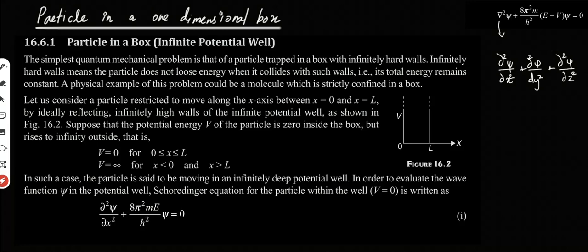The simplest quantum mechanical problem is that of a particle trapped in a box with infinitely hard walls. Infinitely hard walls means the particle does not lose energy when it collides with such walls. That is why we have the elastic collision — there is no energy lost even when there is a collision. If the collision happens, the energy remains constant; that is, total energy remains constant.